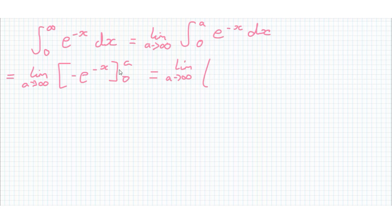And then we just substitute in a and 0, so that's minus e to the minus a and then that is plus e to the minus 0 so this is just 1. So this is just equal to the limit as a tends to infinity of minus e to the minus a plus 1.